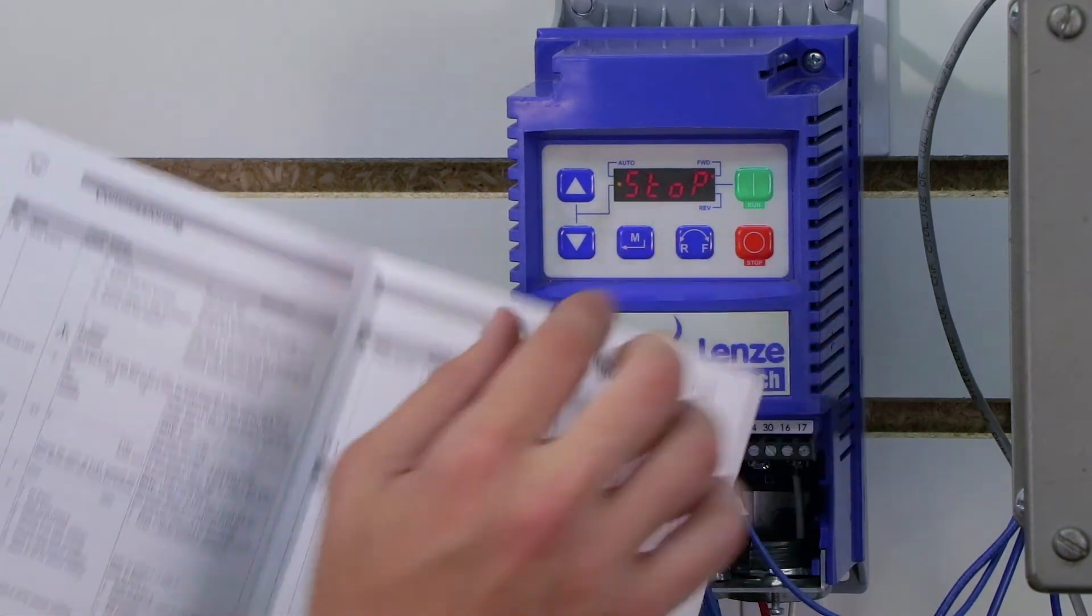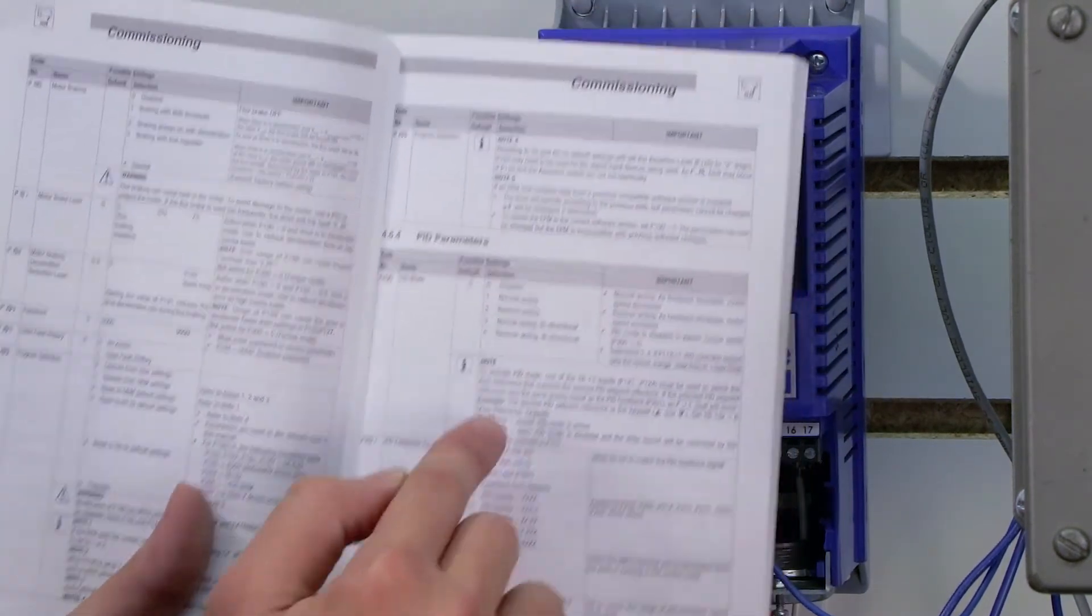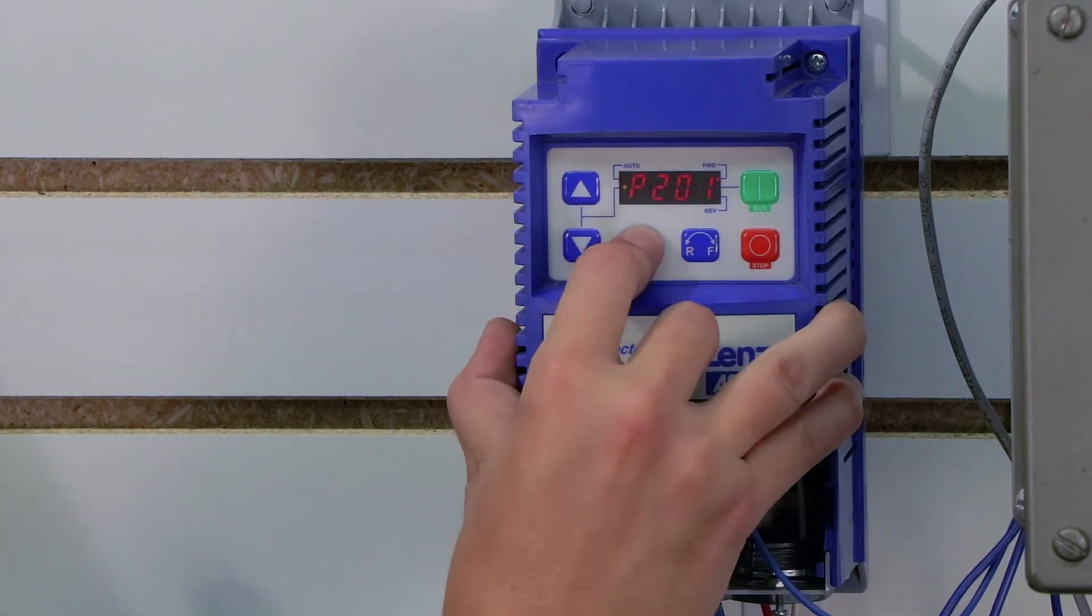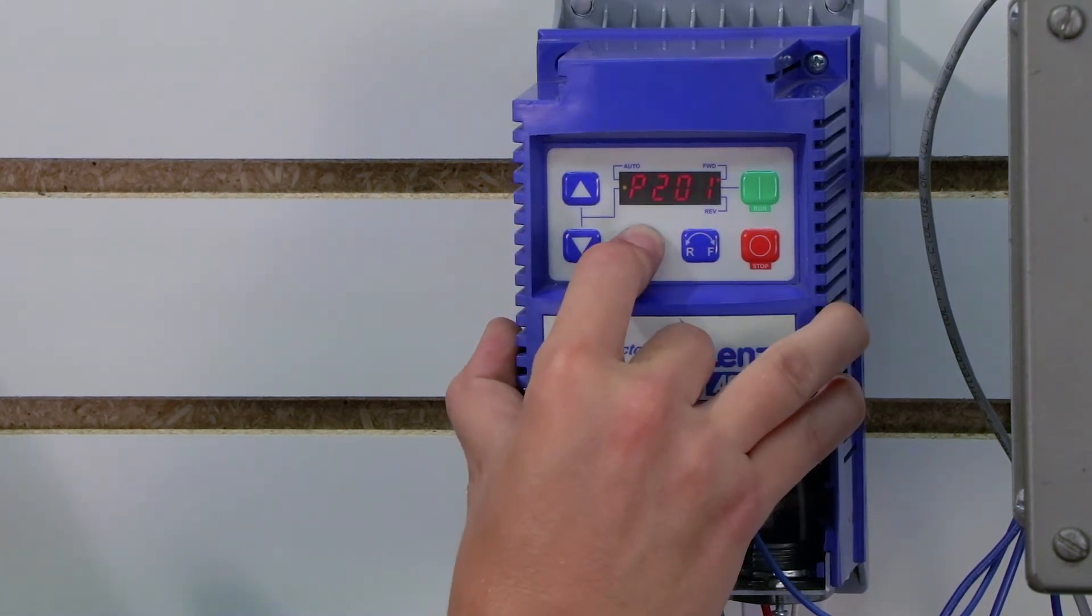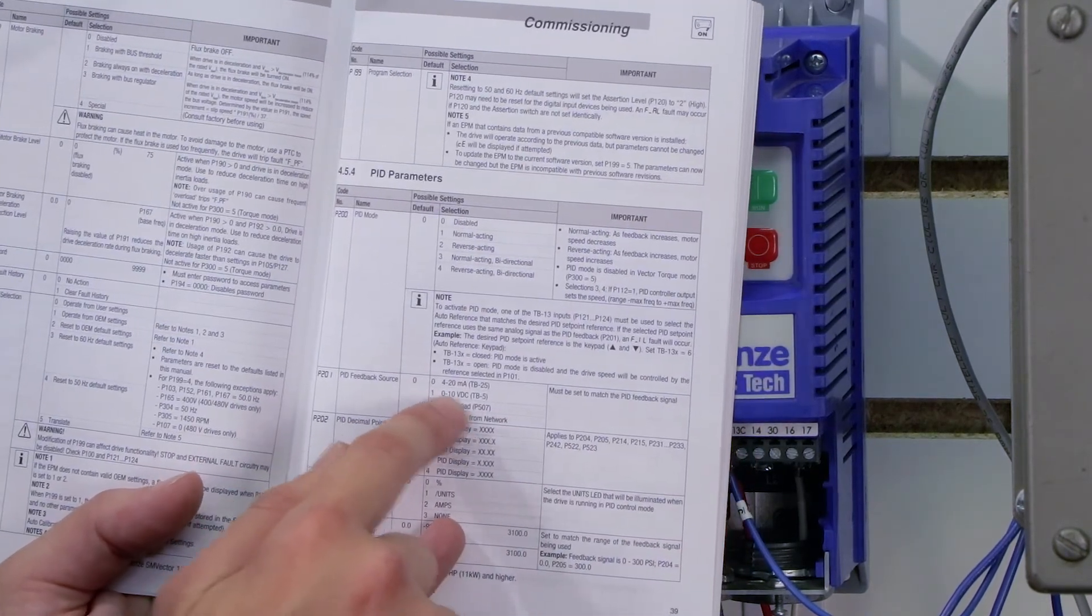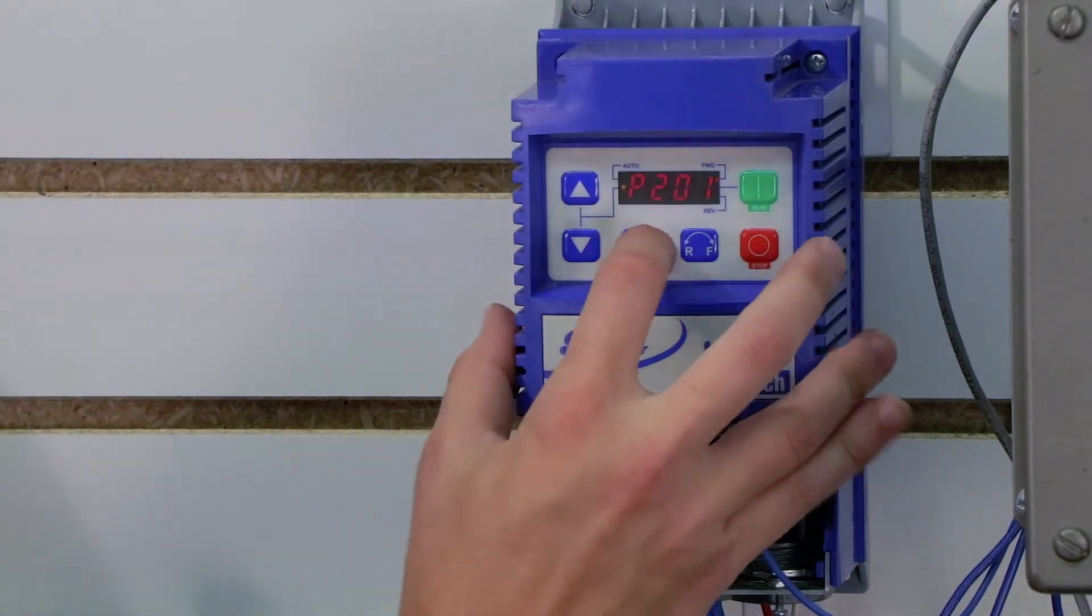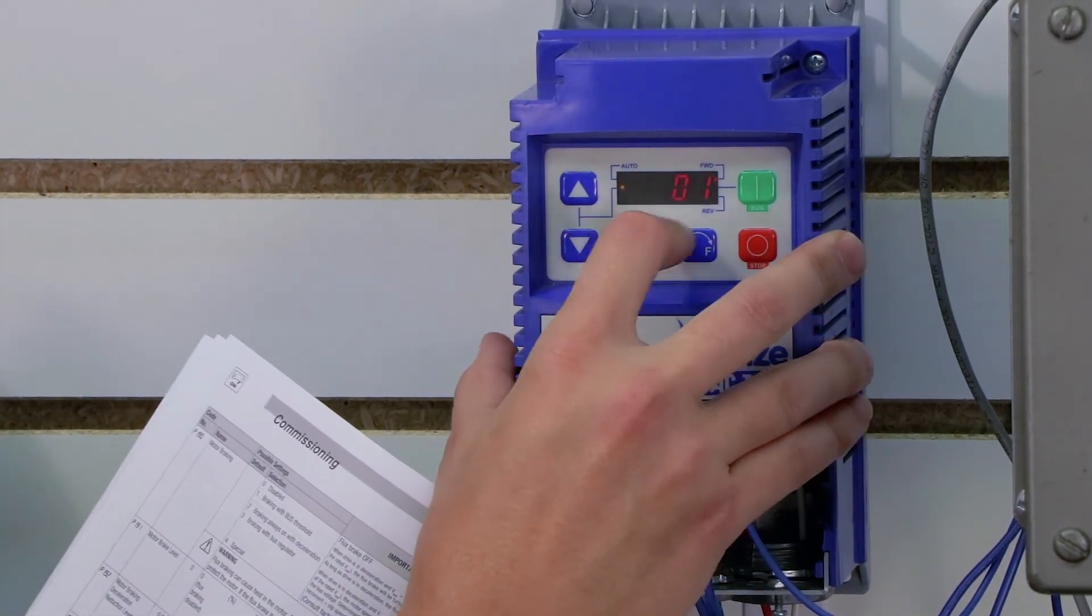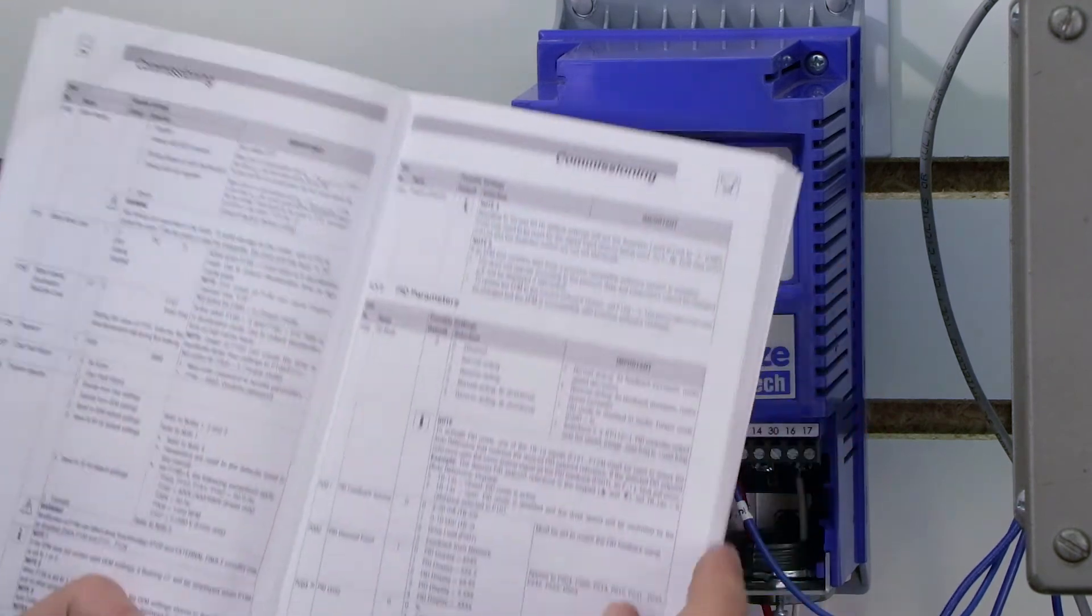My next parameter I need to set is actually parameter 201. That's my feedback source. And that's my signal that my actual water level is coming from. In my case, like I said, I'm using a speed pot. So I'm going to use this 0 to 10 volt DC. But you want to select whatever your sensor is set up for. And again, I press 201 and I set 1, which is 0 to 10 volts DC.